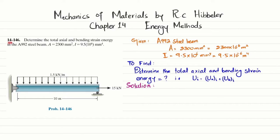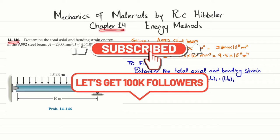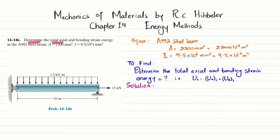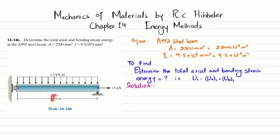Welcome back. In this video we are going to solve problem 14-146 taken from Chapter 14, Energy Methods, in Mechanics of Materials by R.C. Hibbeler. The statement is: determine the total axial and bending strain energy in an A992 steel beam where area is 2300 square millimeters and I is 9.5 × 10⁶ mm⁴. We will find the axial strain energy, the bending strain energy, and sum them for the total.